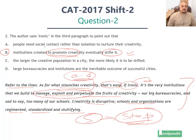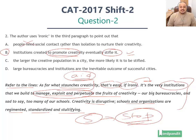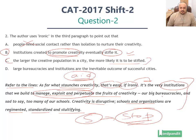Option A says: people need social contact rather than isolation to nurture their creativity. Remember, institutions have to be present in the answer option — this is not about people, it is about institutions. Option C says: the larger the creative population in a city, the more likely it is to be stifled. In this particular context, the size of the population is not even mentioned or correlated. Hence options A and C are ruled out.